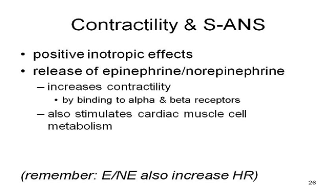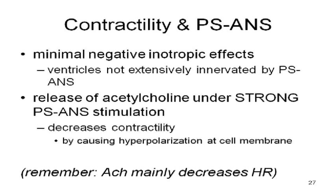Epinephrine and norepinephrine also stimulate the metabolic rate of heart muscle cells so more ATP is generated. The parasympathetic autonomic nervous system mainly innervates the top part of the heart, not so much the ventricles. The sympathetic system innervates pretty much all of the heart. So the parasympathetic system's main effect is slowing the heart down — the release of acetylcholine slows the heart. You really only get a decrease in contraction with a huge amount of parasympathetic stimulation.